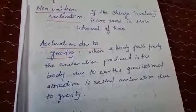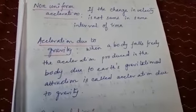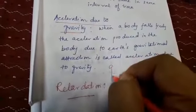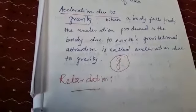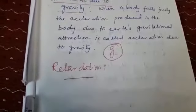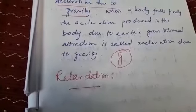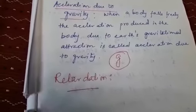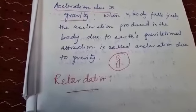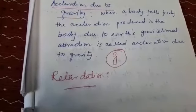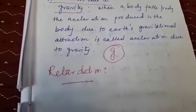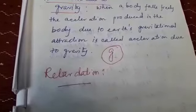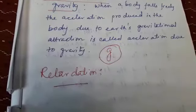Acceleration due to gravity is a very common term. When a body falls freely, the acceleration produced in the body due to Earth's gravitational attraction is called acceleration due to gravity, denoted by small g, and its value is 9.8 m/s². Next is retardation — retardation is negative acceleration. Suppose you are driving a car and apply a brake; the car will slow down and cover a little distance before coming to rest. That slowing down under application of brakes is called retardation — it is nothing but negative acceleration.